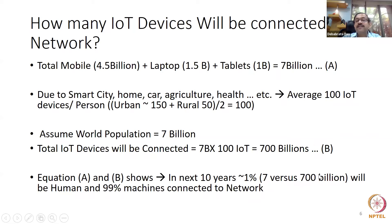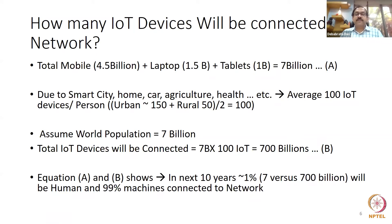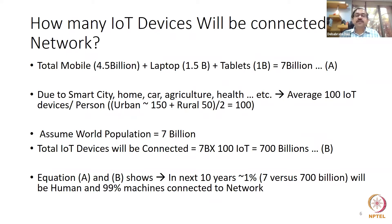So one percent will be human connected to the networks. See how the ratio changes. In 4G today, human beings are 99% and machines are 1%. But when 5G comes with IoT and Industry 4.0, the ratio will reverse: 1% human beings — 7 billion — connected to the internet, and 700 billion machines. So 99% of the traffic will be machine connected.